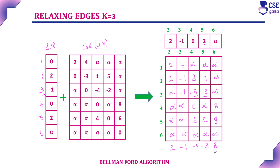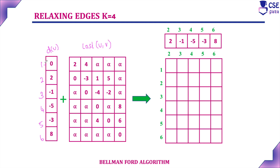The new shortest distance after k = 3 is: 0, 2, −1, −5, −3, 8. Continuing to k = 4: for vertex 1: 0+2, 0+4, ∞, ∞, ∞. For vertex 2: 2+0, 2−3, 2+1, 2+5, ∞. For vertex 3 with −1: −1+∞, −1+0, −1−4=−5, −1−2=−3, ∞. For vertex 4 with −5: ∞, ∞, −5+0, ∞, −5+8=3. The minimum values are: vertex 2→2, vertex 3→−1, vertex 4→−5, vertex 5→−3.